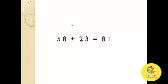What is 58 plus 23? 8 plus 3 is equal to 11, so put 1 here and carry forward 1. So 5 plus 2 is equal to 7, and 7 plus 1 is equal to 8. So the answer is 81.